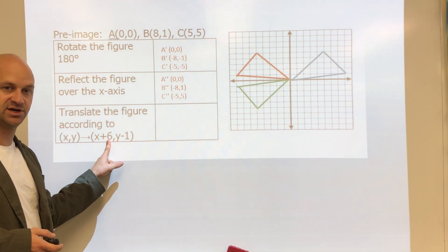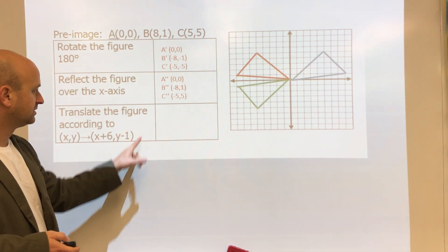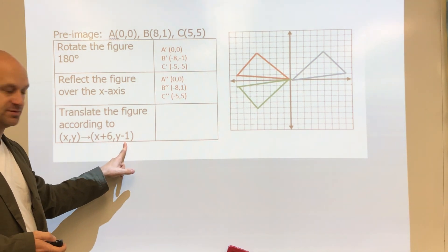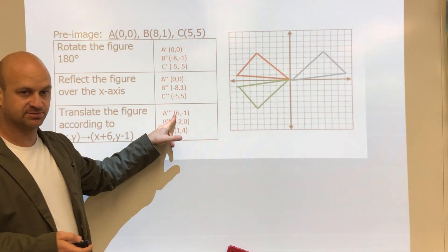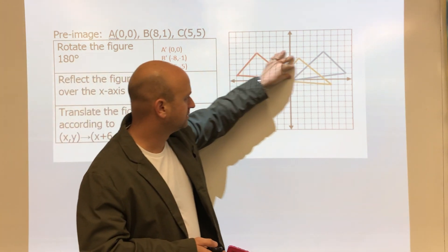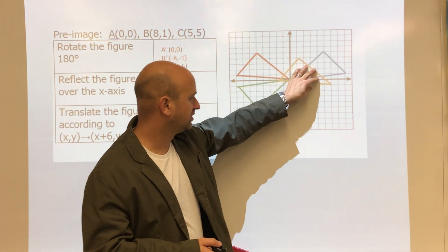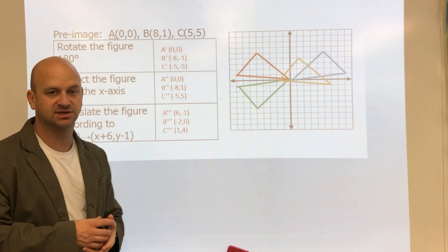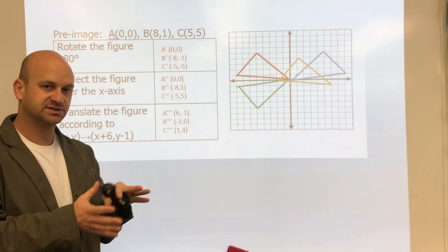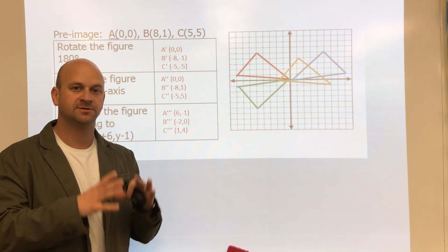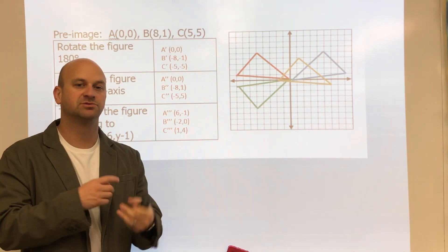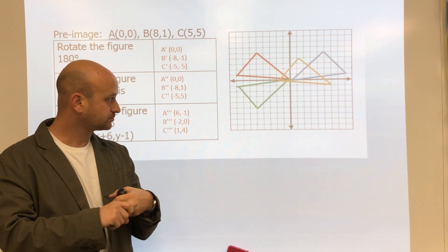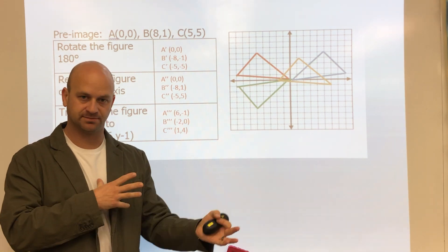The last transformation is a translation: six right and one down. From all these values we add six to the x and subtract one from the y, ending up with triple prime. We go six right and one down to get our final triangle. These are just a few examples of what's possible — this is a good time in the unit to review rotations, translations, and reflections, because we're just combining them.